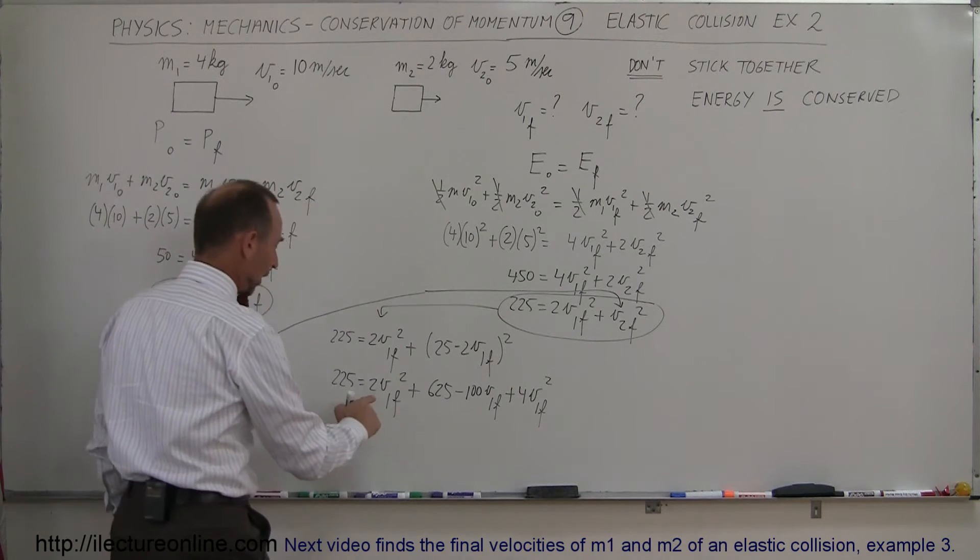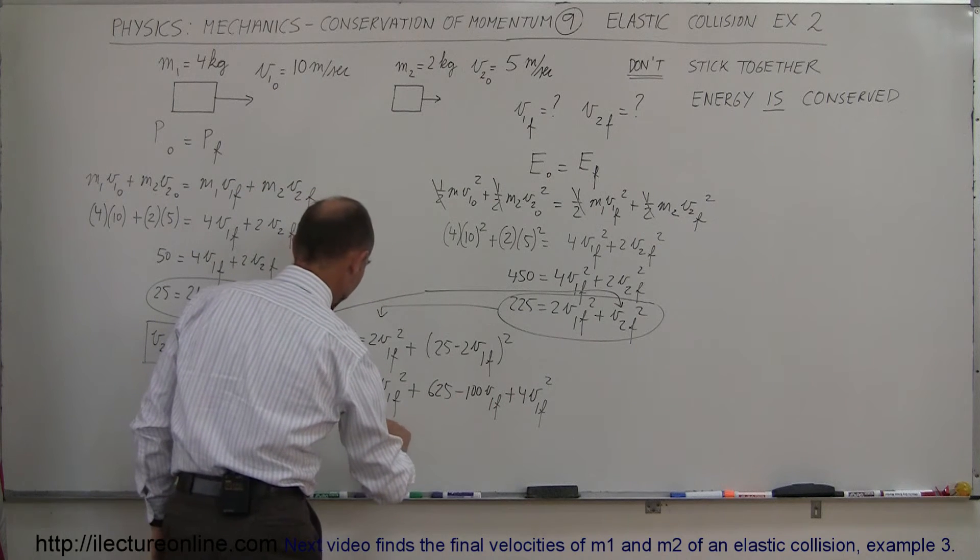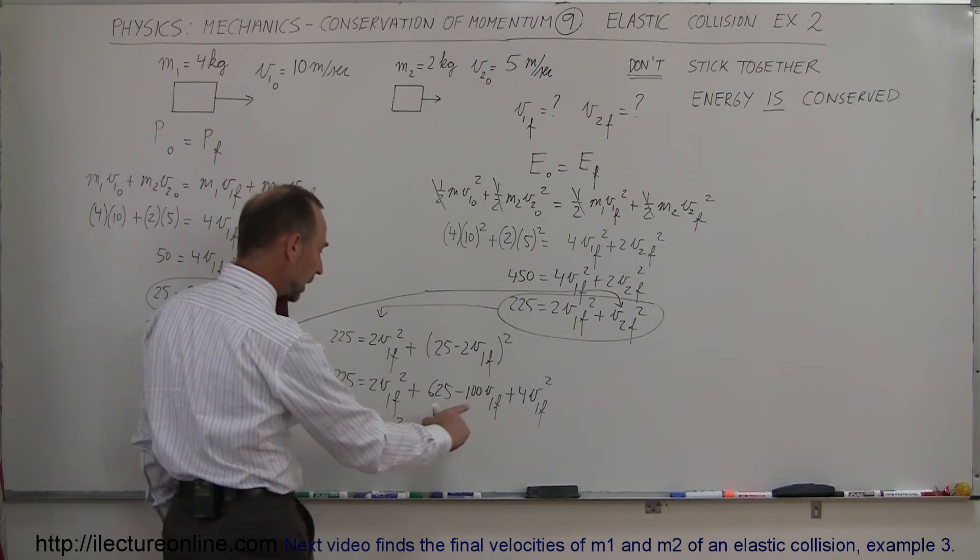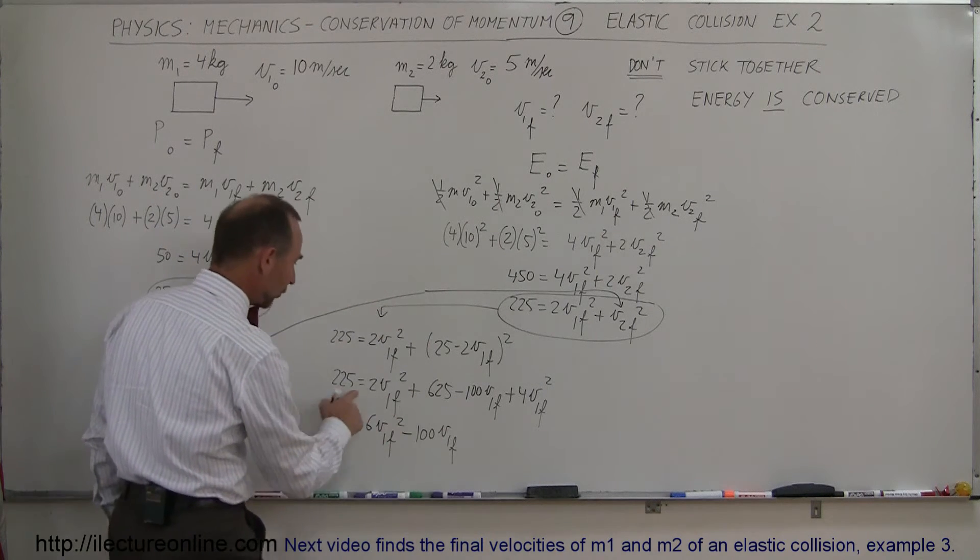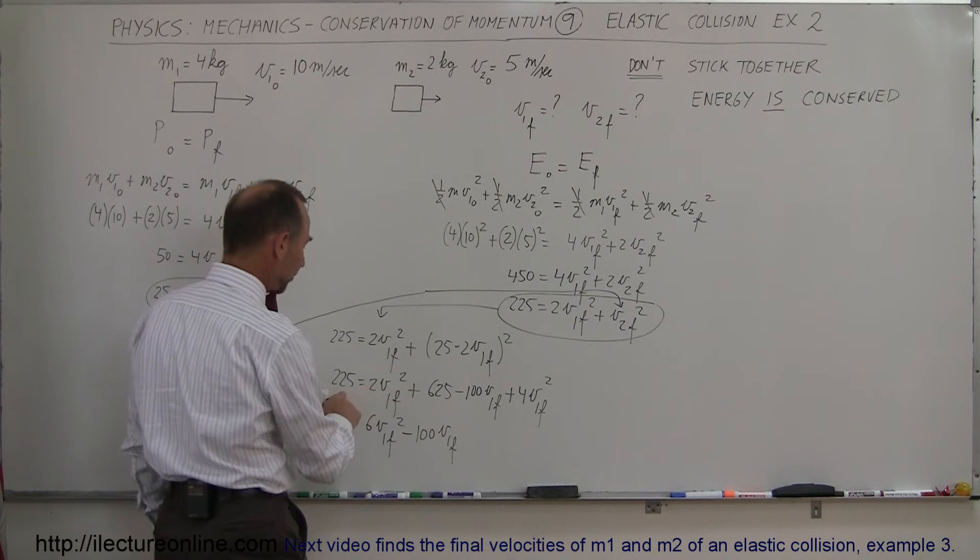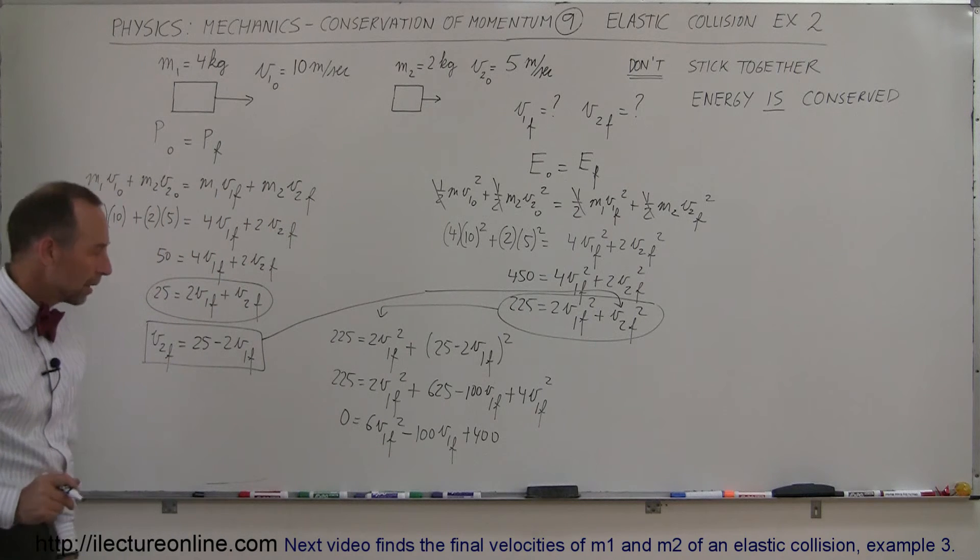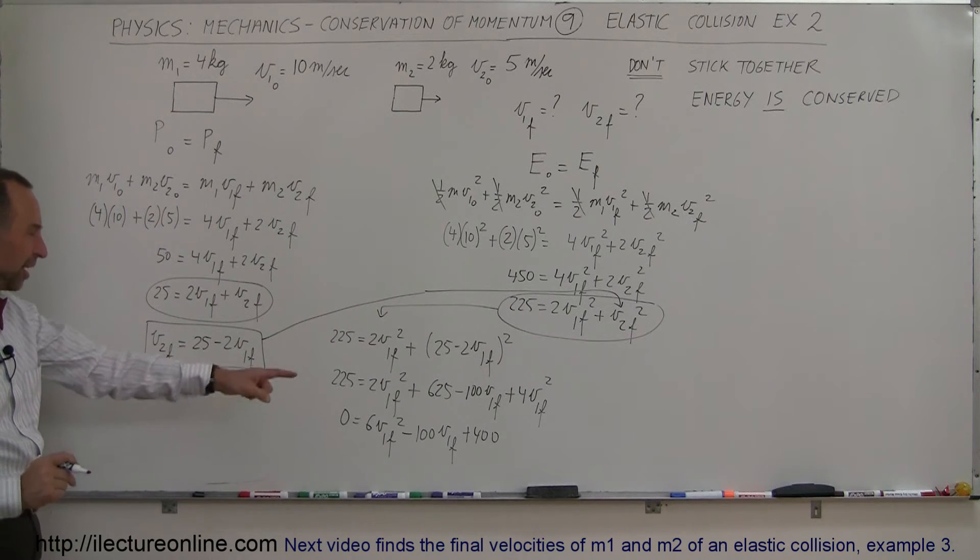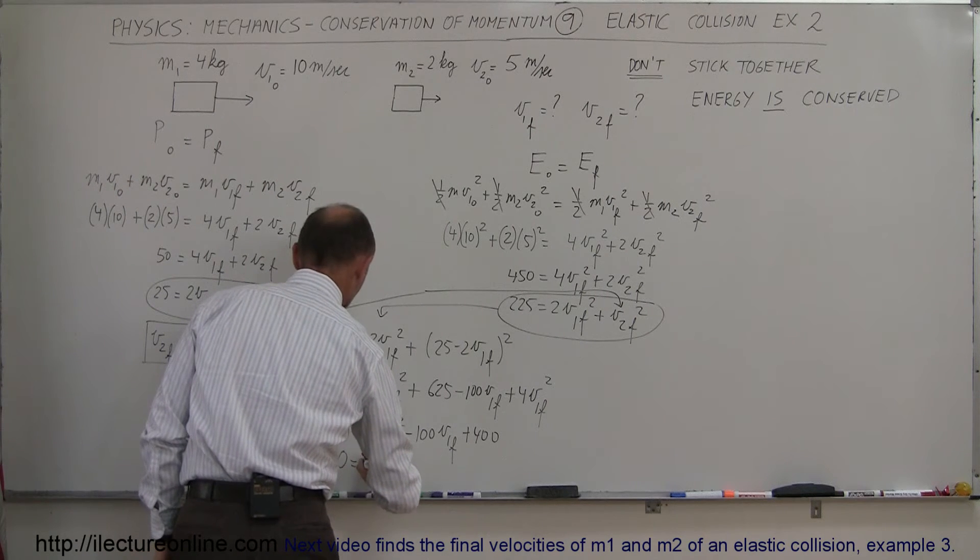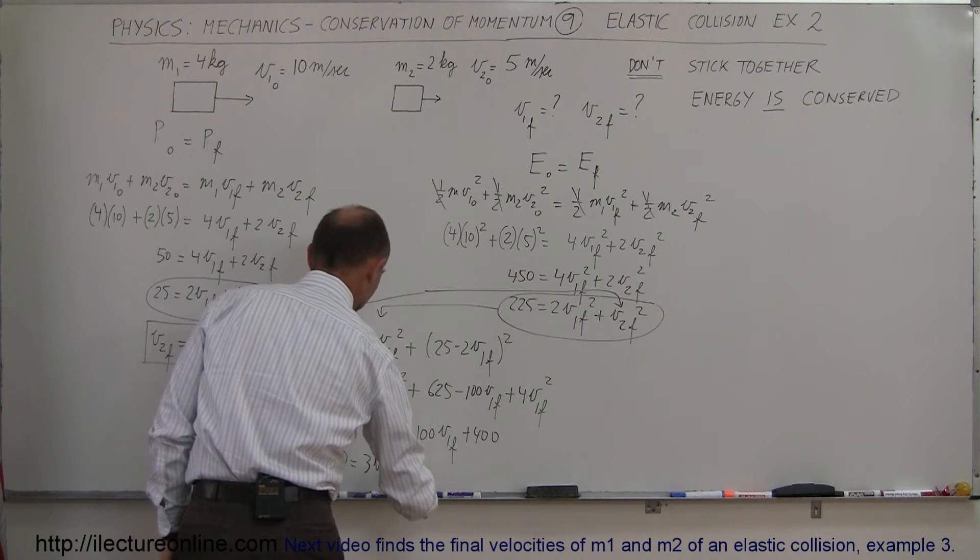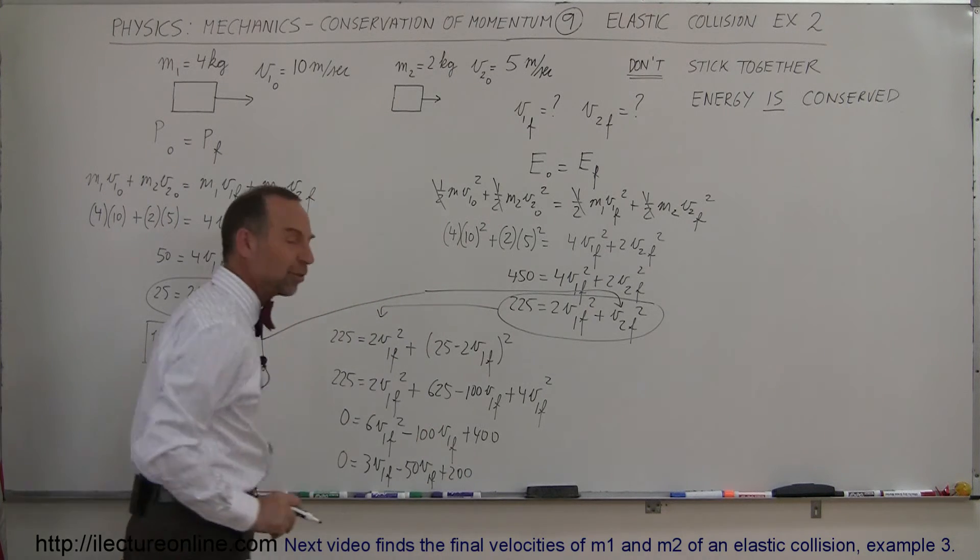Now we combine like terms and move everything over to one side. So I have 0 equals, we have a 2 V1 final squared and 4 V1 final squared, that gives me 6 V1 final squared, minus 100 V1 final, and finally when I move this over to here, I subtract 225 from 625 and I get plus 400. We could simplify because everything is even here, so just to make numbers a little bit smaller, I could write this as 0 is equal to 3 V1 final squared minus 50 V1 final plus 200. So at least the numbers are a little bit smaller now.